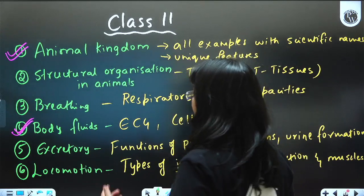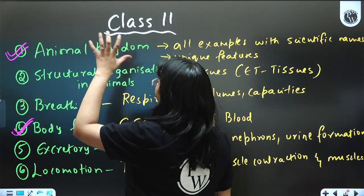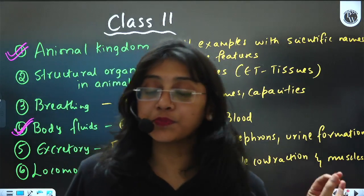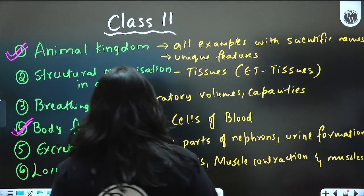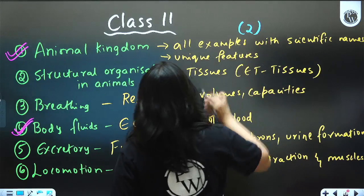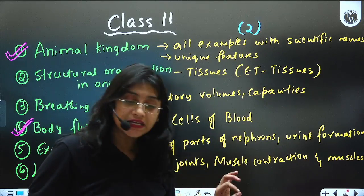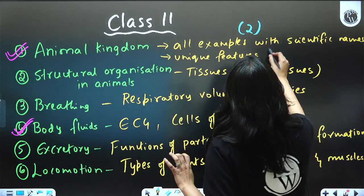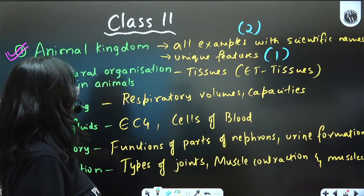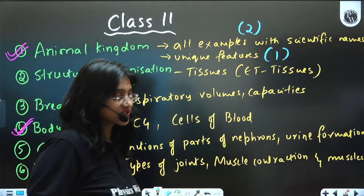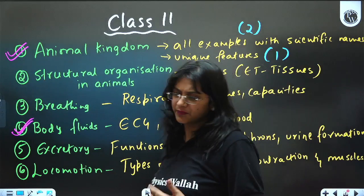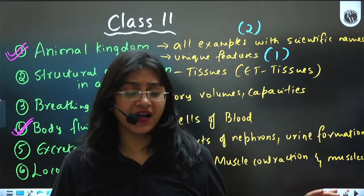From Animal Kingdom, you need to remember all the examples with their scientific names — around two questions will be asked from this. You also need to know the unique features of each phylum, and one question will be asked from this. Other types of questions can also be asked, but these are the most expected, as confirmed by looking at past five to ten years' question papers.